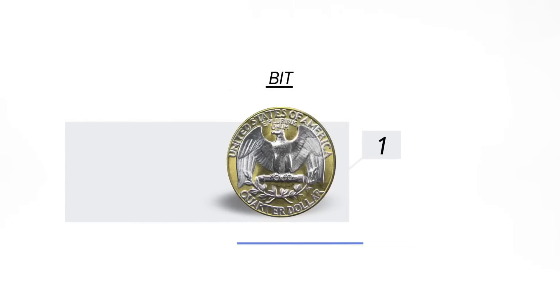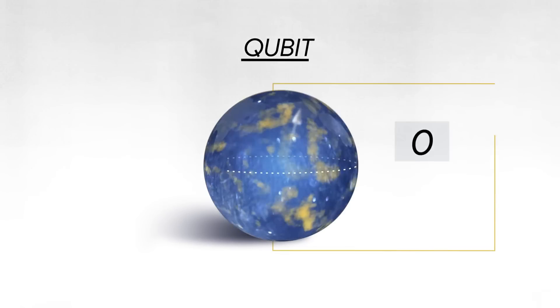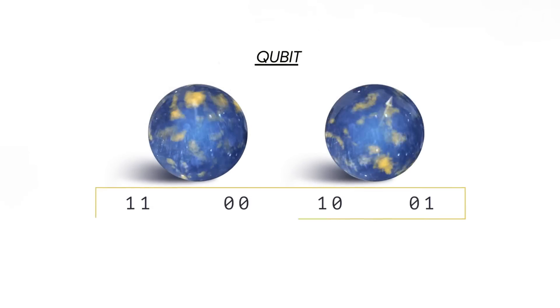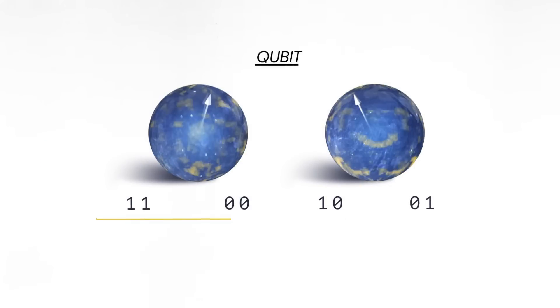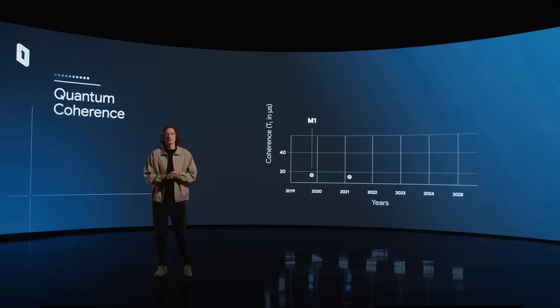At the time, Google made a similar claim, arguing that it had achieved quantum supremacy or the point where quantum computers can do things that classical computers can't, regardless of whether those tasks are useful. As John Preskill, who first coined the term in 2012, wrote in a 2019 Quantum Magazine column, 'The implications and significance of Google's breakthrough remain up for debate.'